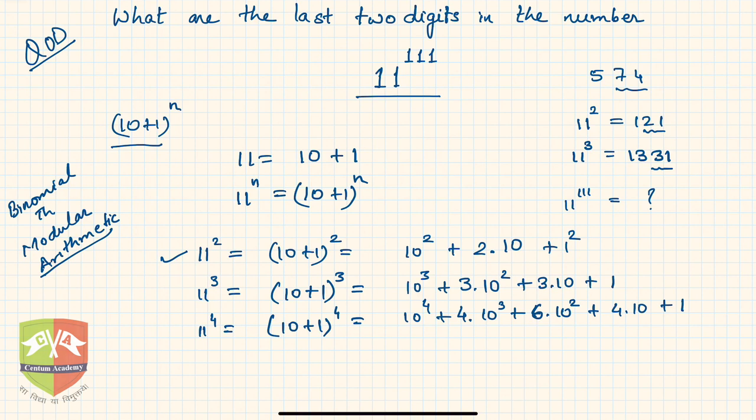So if you notice the trend as you are increasing the power 2, 3, and 4, so you see a trend here that is 2, this is 2, this is 3, and this is 4. Likewise here if you see this is 3, this is 4, right? The second last term has these coefficients.